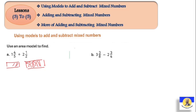Okay, good. And two and a half - how can we draw two and a half? It's one, two. Then for the half, we draw it like this. So we've drawn two and a half.